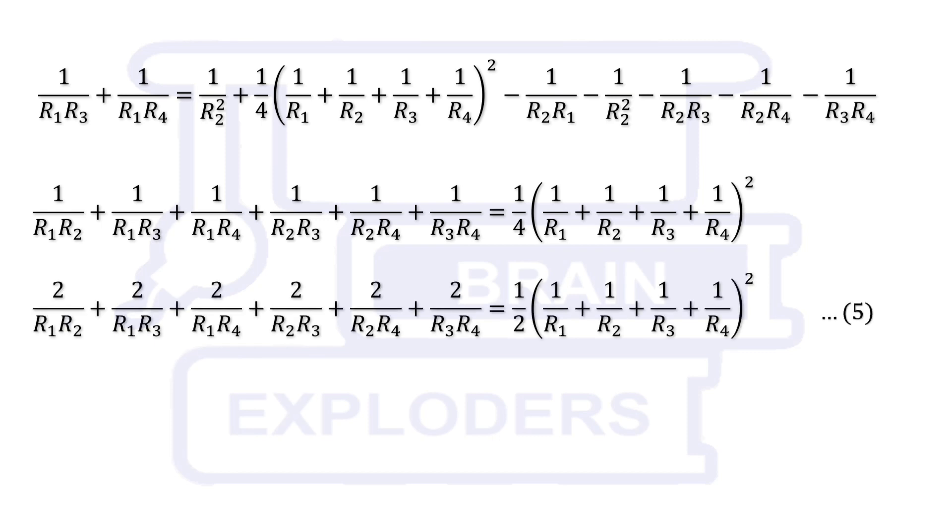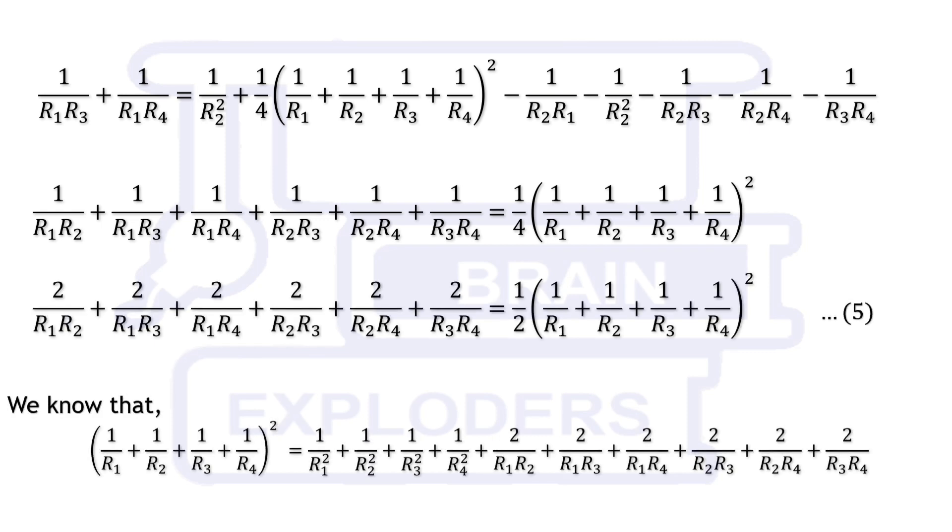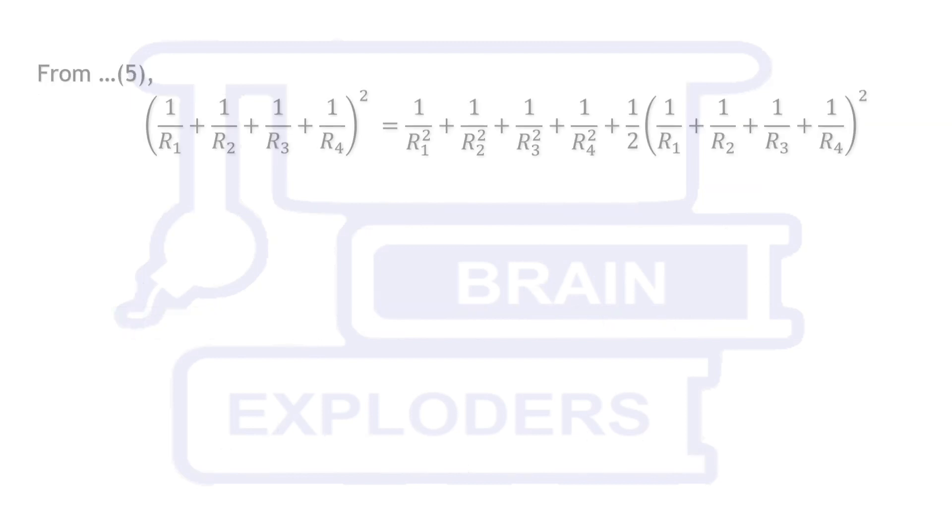Now start the next step with the expansion of 1 upon r1 plus 1 upon r2 plus 1 upon r3 plus 1 upon r4 whole squared. Value of 2 upon r1 plus 2 upon r2 plus 2 upon r3 and so on can be replaced by using equation 5.